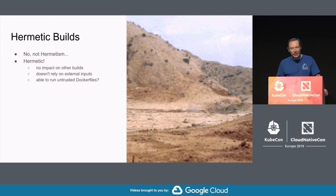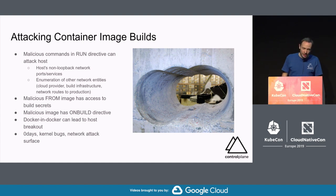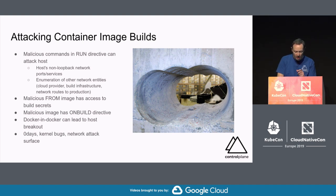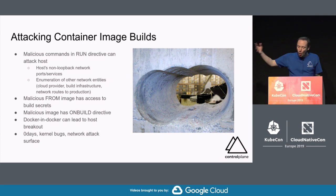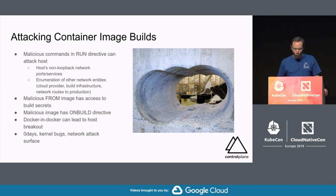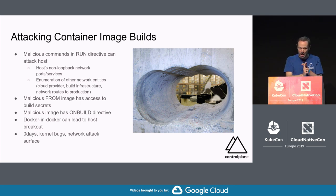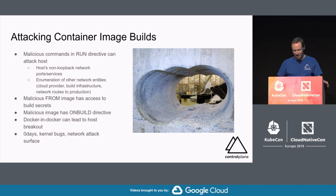So how do we attack a build? If the Dockerfile is untrusted, malicious commands in the RUN directive can attack the host — attacking non-loopback network ports and services, enumerating other network entities, cloud provider build infrastructure, routes to other services, and metadata APIs. Despite a trusted Dockerfile, a malicious or compromised image in the FROM directive has access to any build secrets added or mounted at build time. A malicious image with a nefarious ONBUILD directive gives arbitrary code execution in a descendant image. With Docker-in-Docker we can reach the host via a privileged container, which disables seccomp, AppArmor, capabilities, and all namespaces.